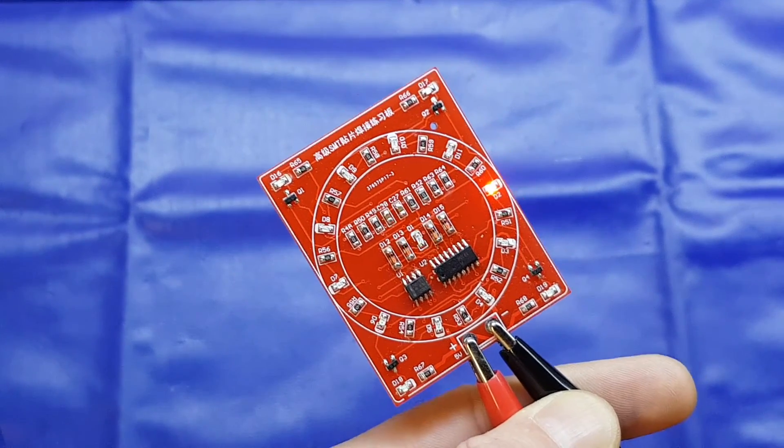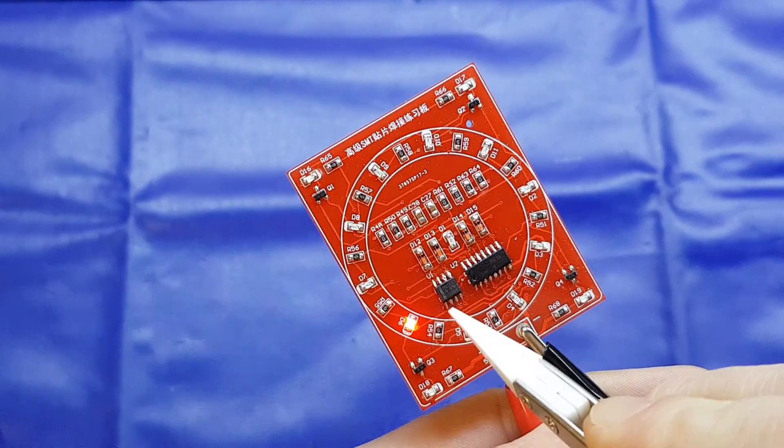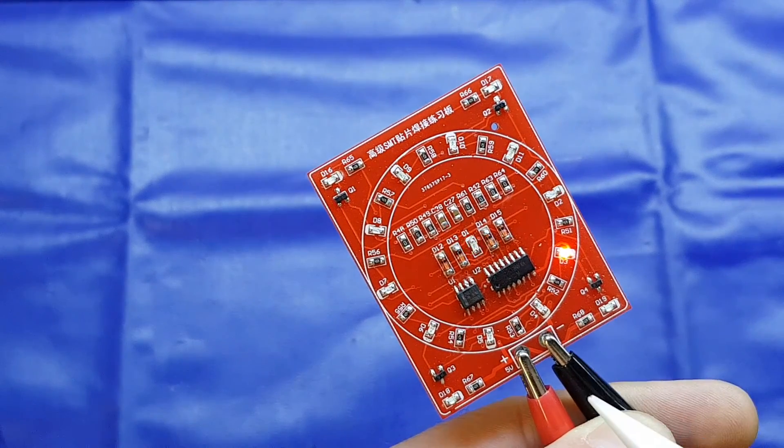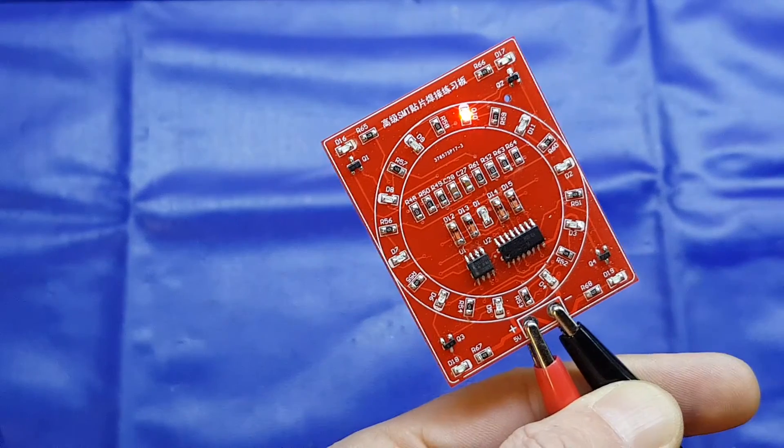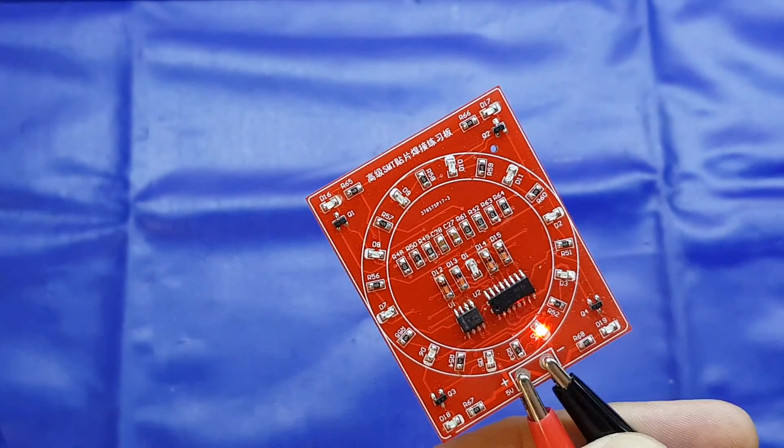Hello again folks. I thought we'd revisit this surface mount kit that I built a few videos ago. It's a 555 timer and a 4017 decade counter, and as you can see it's flashing these red LEDs around this ring as well as the one in the center.